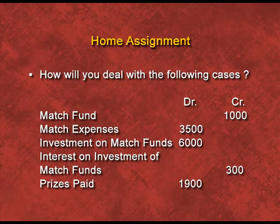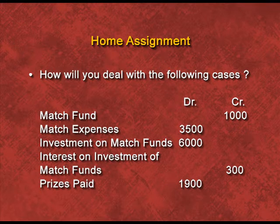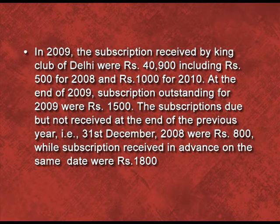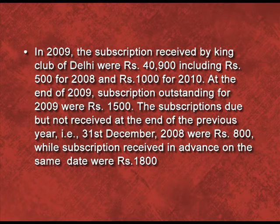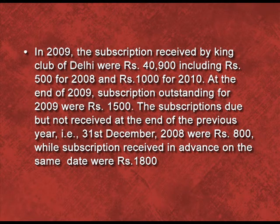You can see the fund based accounting question — items include match fund rupees 10000 on credit side, match expenses rupees 3500 debit side, investment on match fund rupees 6000, interest on investment of match fund rupees 300 on credit side, and prizes paid rupees 1900. There is also a subscription question: in 2009 the subscription received by King Club of Delhi were rupees 40900, including rupees 500 for 2008 and rupees 1000 for 2010. At the end of 2009, subscription outstanding were rupees 1500. Subscription due but not received at end of 2008 were rupees 800, while subscription received in advance on the same date were rupees 1800. You have to calculate the subscription amount to show in the income and expenditure account.